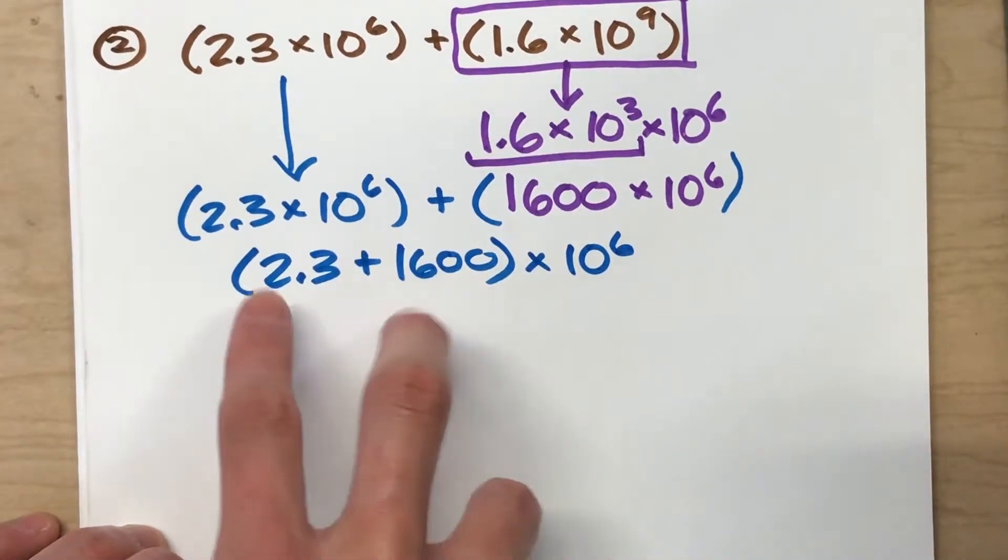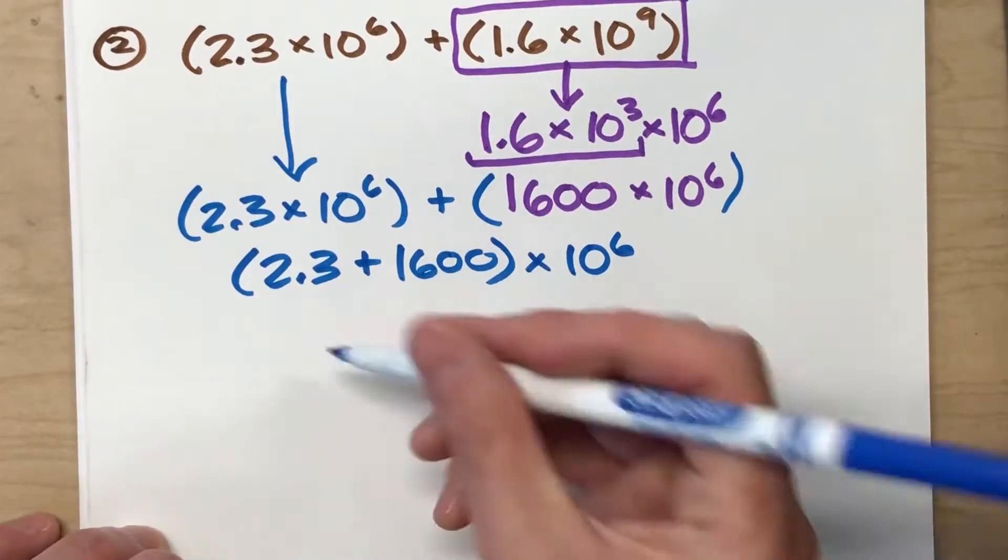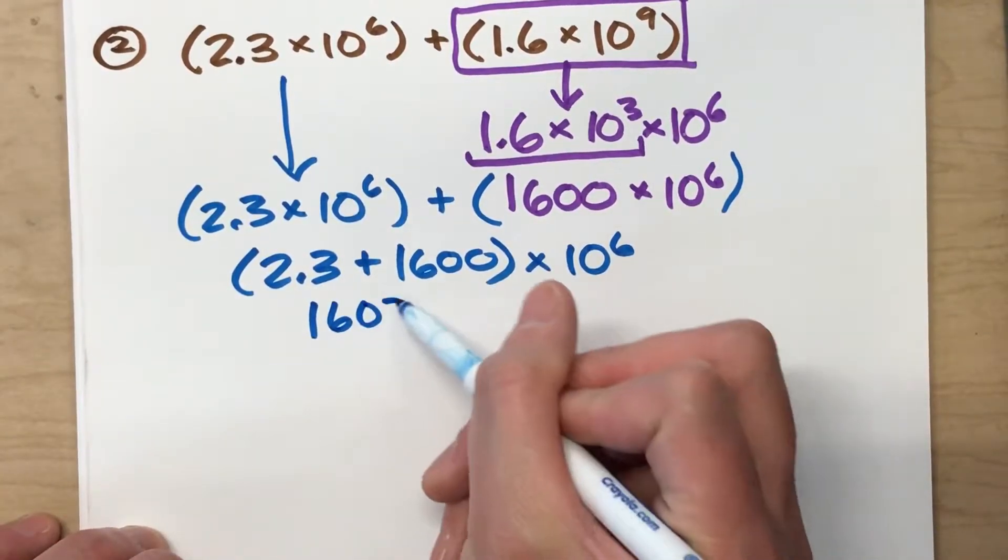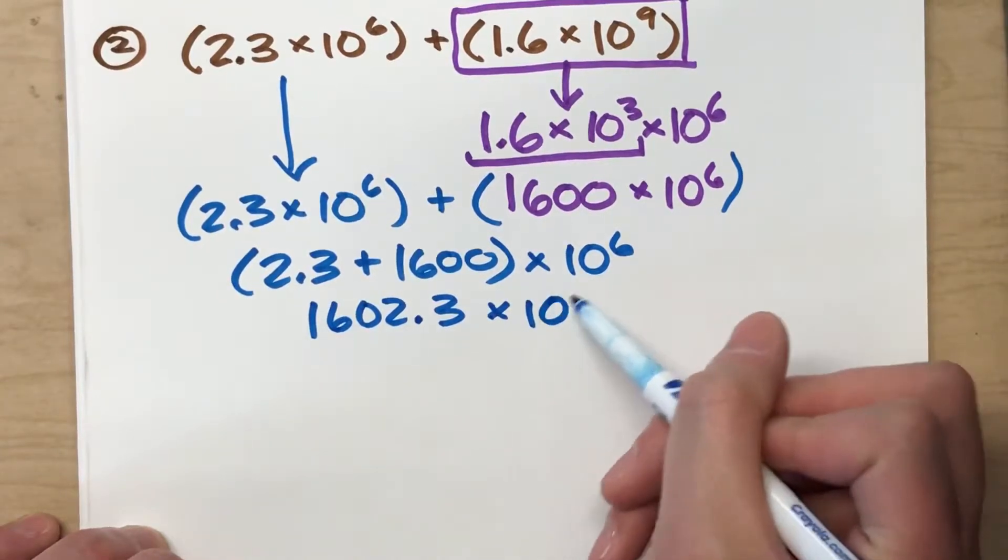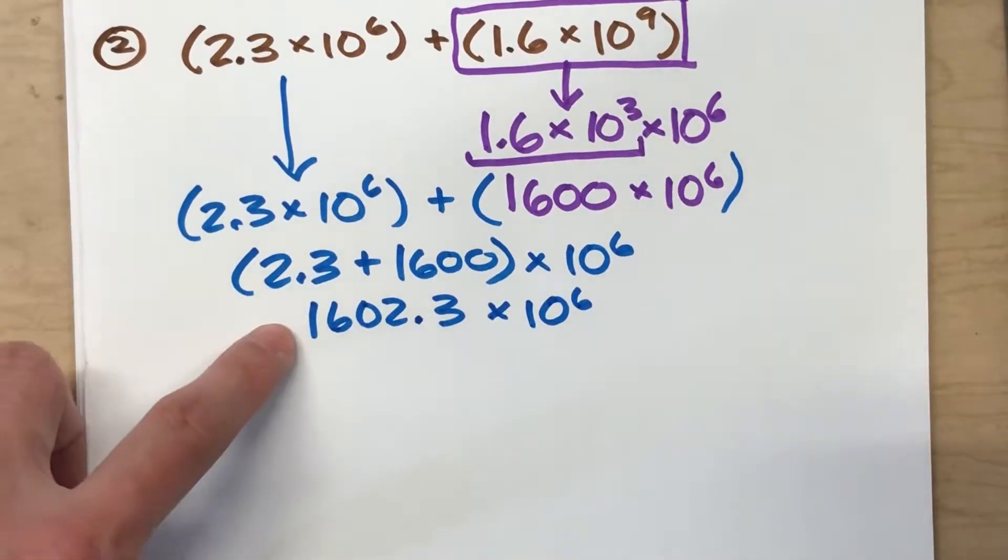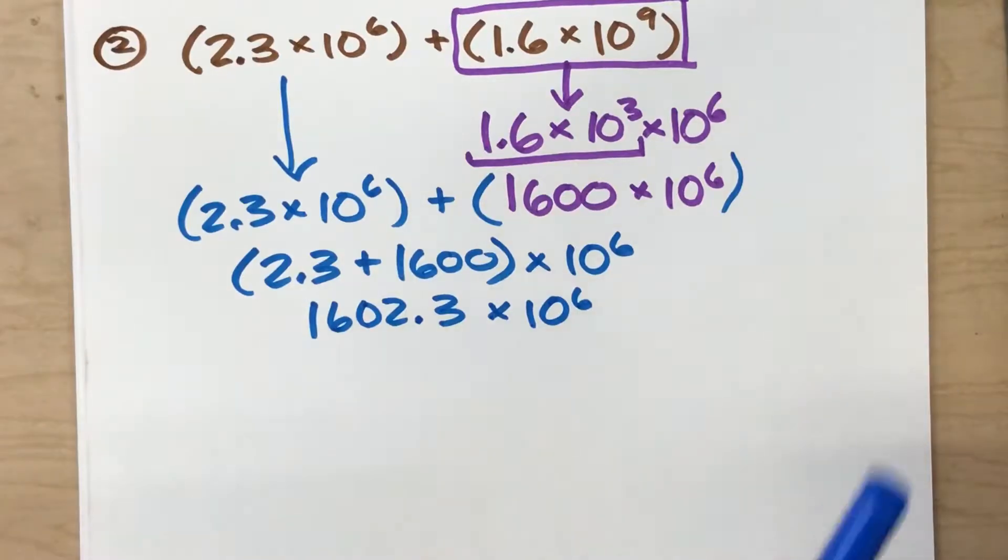Now when I add this up, 1600 plus 2.3, that's 1602.3, and that's still times 10 to the 6th power. And I'm almost done, but it's not in scientific notation.